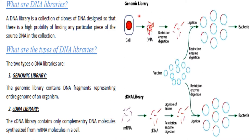In the case of a genomic library, it contains DNA fragments representing the entire genome of an organism. Whereas in the case of a cDNA library, it contains a complementary DNA molecule synthesized from an mRNA molecule in the cell.